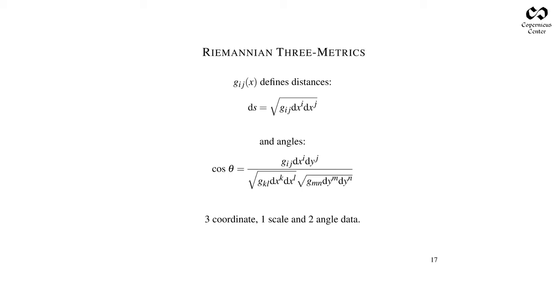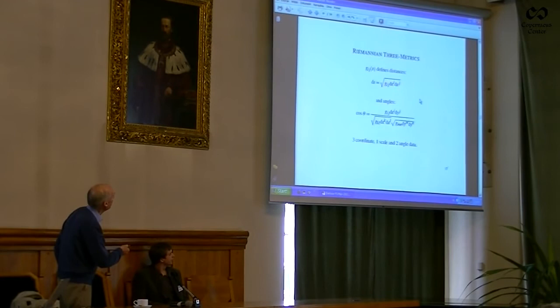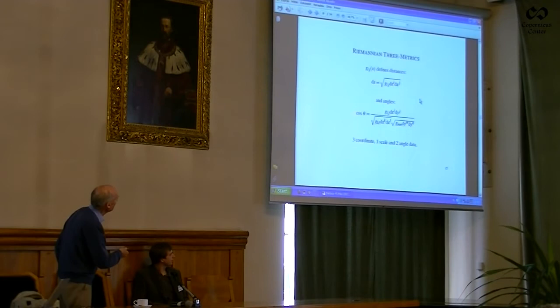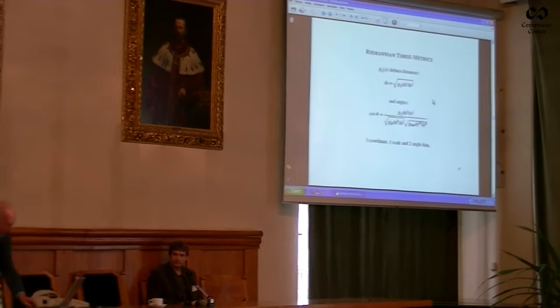A Riemannian 3-metric is a 3 by 3 matrix which gives you dimension for lengths—very fishy, distrust them. This is at the center of attention when you learn Riemannian geometry, but it's fishy because it's dimensionful. It does determine cosines of angles—which are dimensionless—that's reality. So a Riemannian 3-metric has three bits of coordinate information—that's diffeomorphisms—one scale bit of information, which is suspect, and then two angle data, and that's reality.